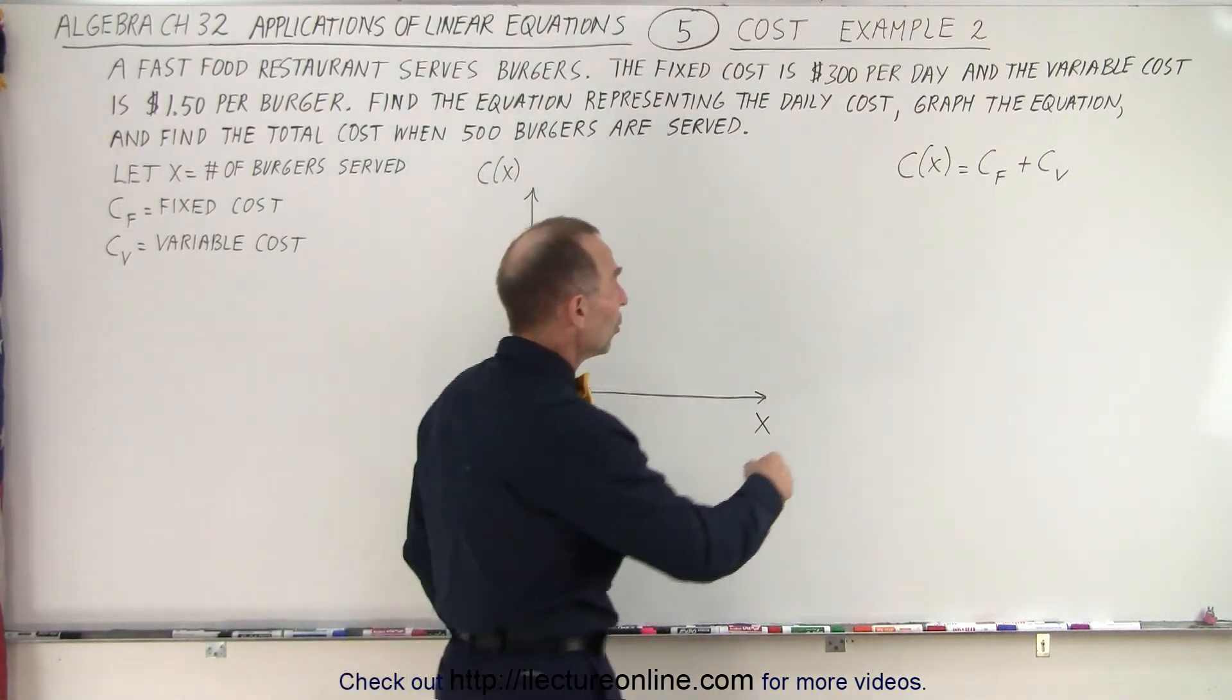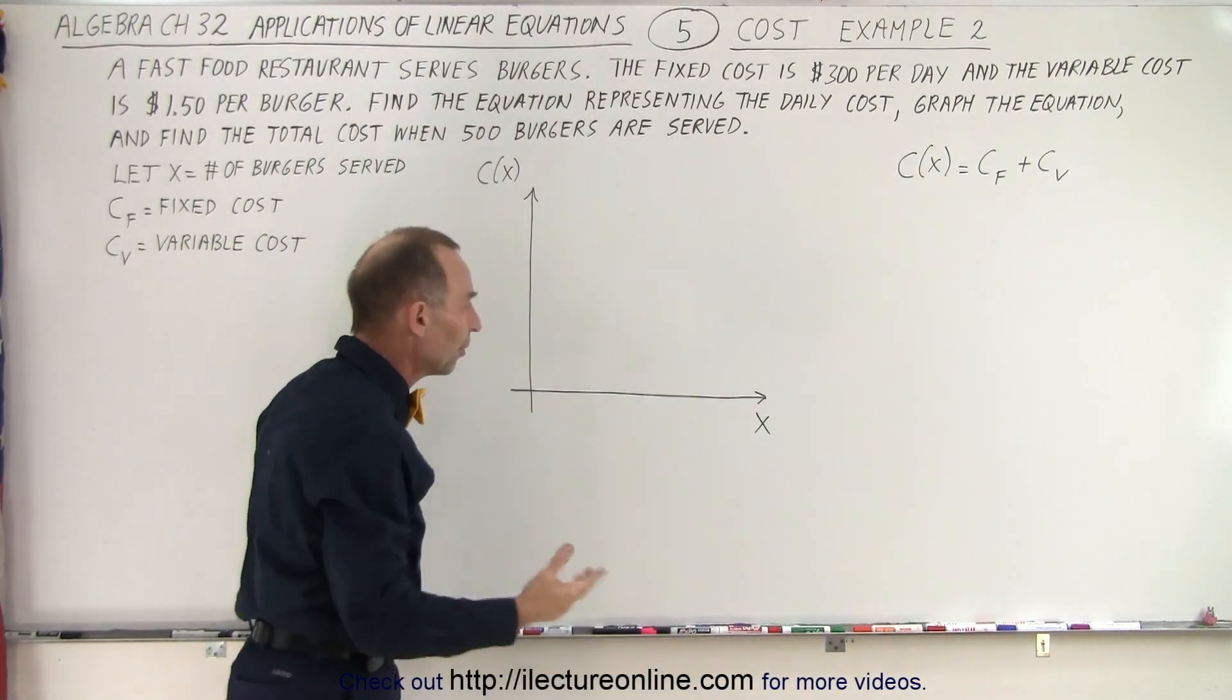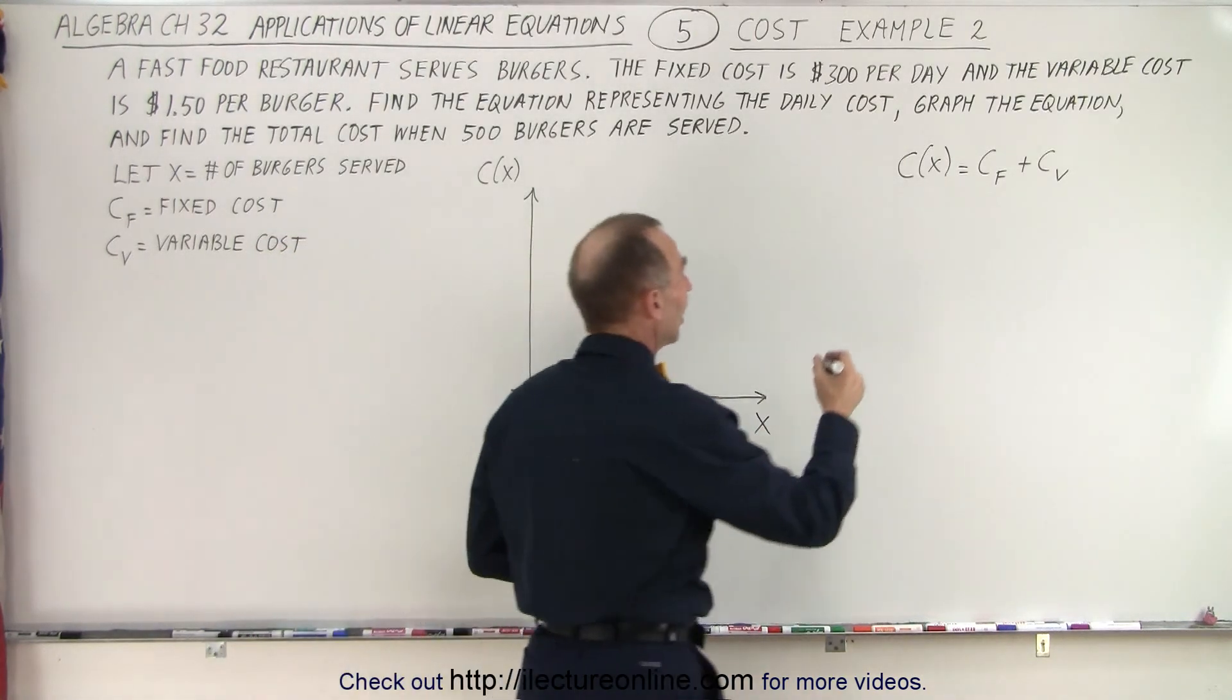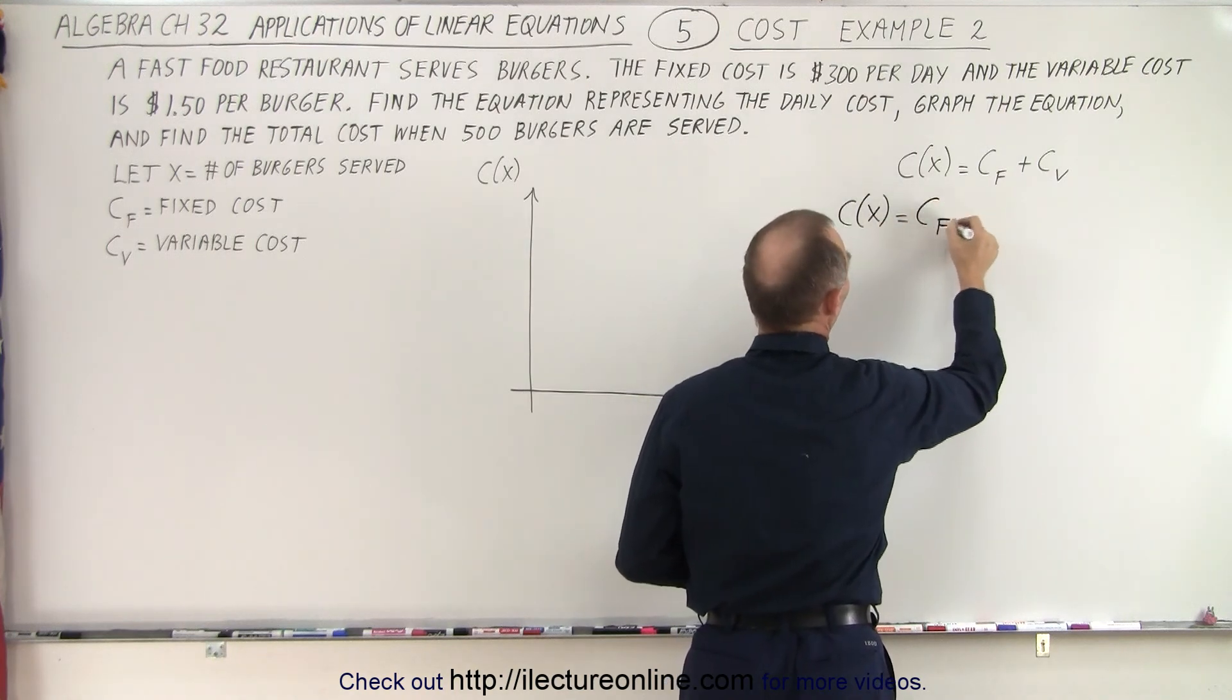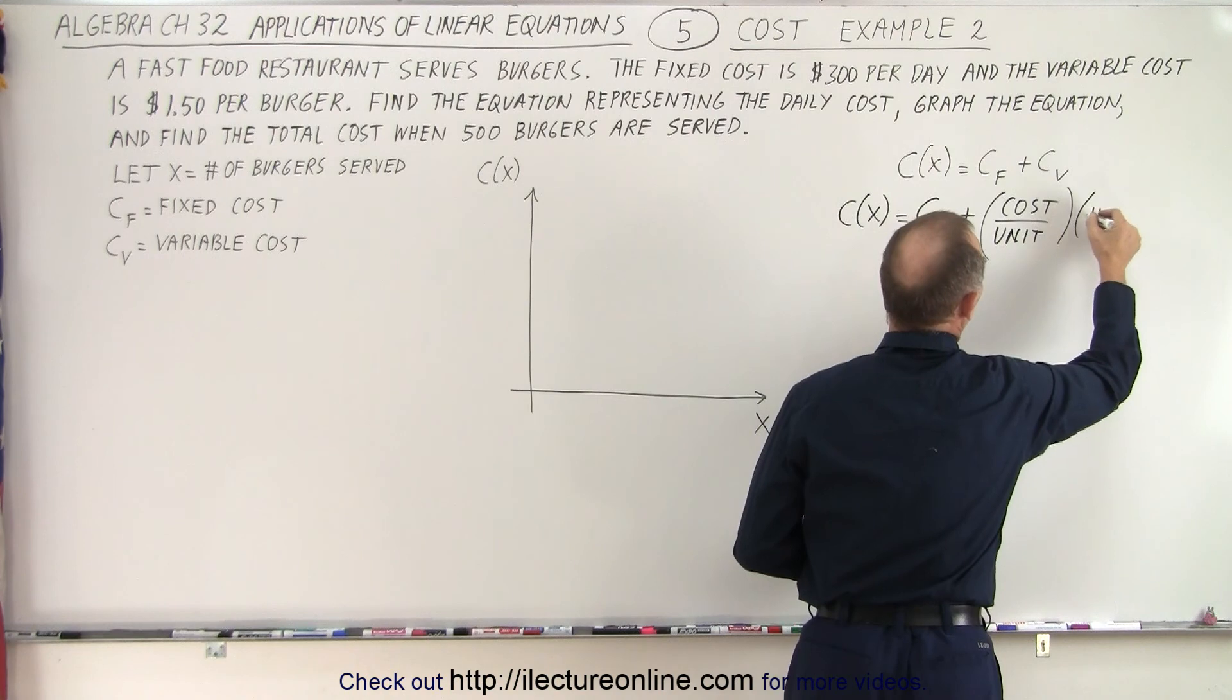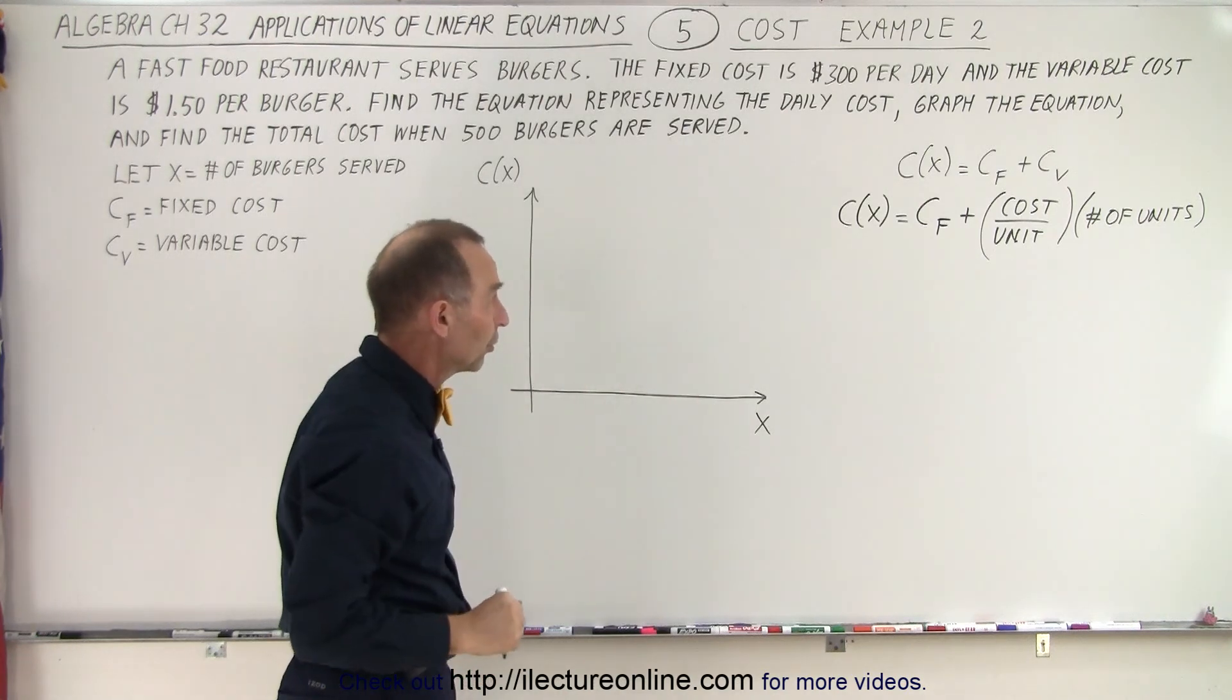So here again we have the equation where the total cost is equal to the fixed cost plus the variable cost. And we're going to let x equal the number of burgers served. So that means in this case that C as a function of x, the cost is a function of the number of burgers served, is equal to the fixed cost plus the variable cost, and the variable cost can be defined as the cost per unit times the number of units. In this case the units represent the number of burgers.